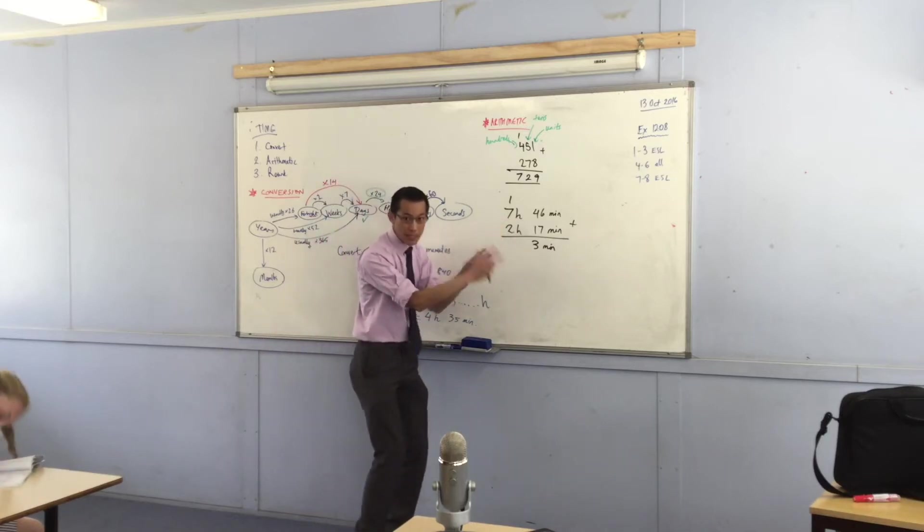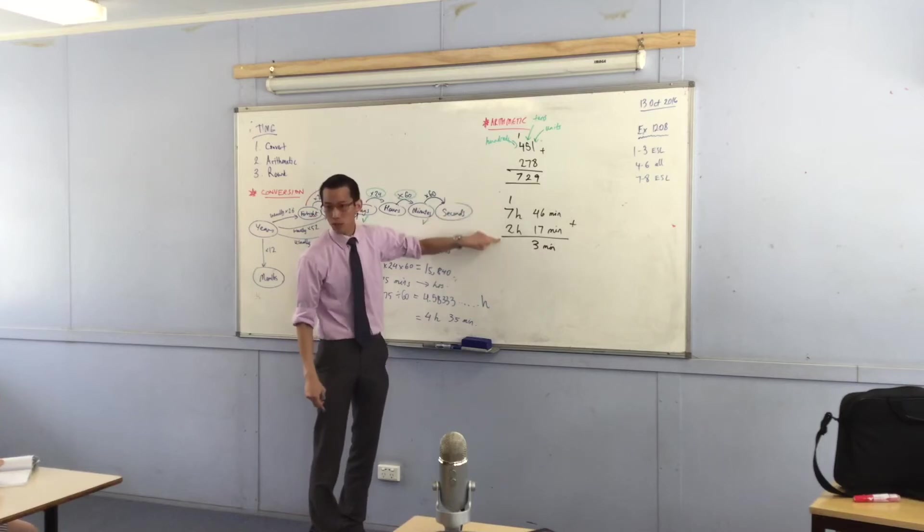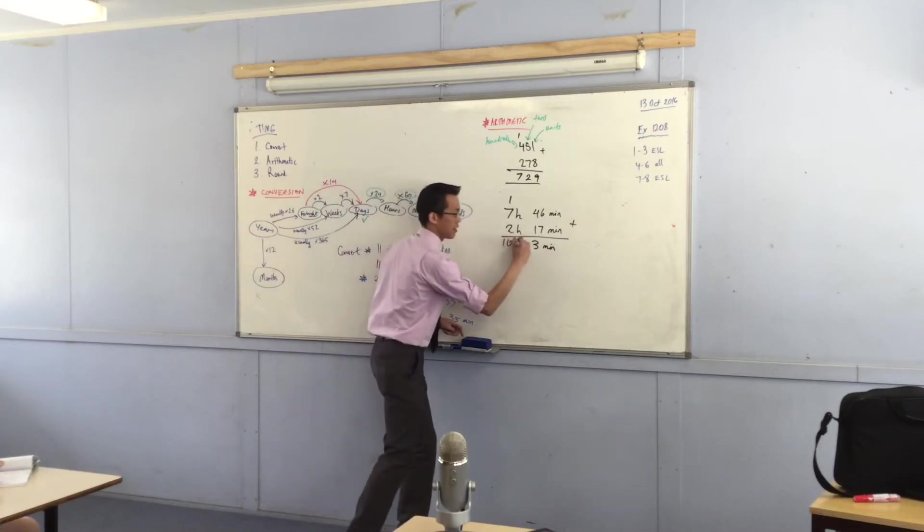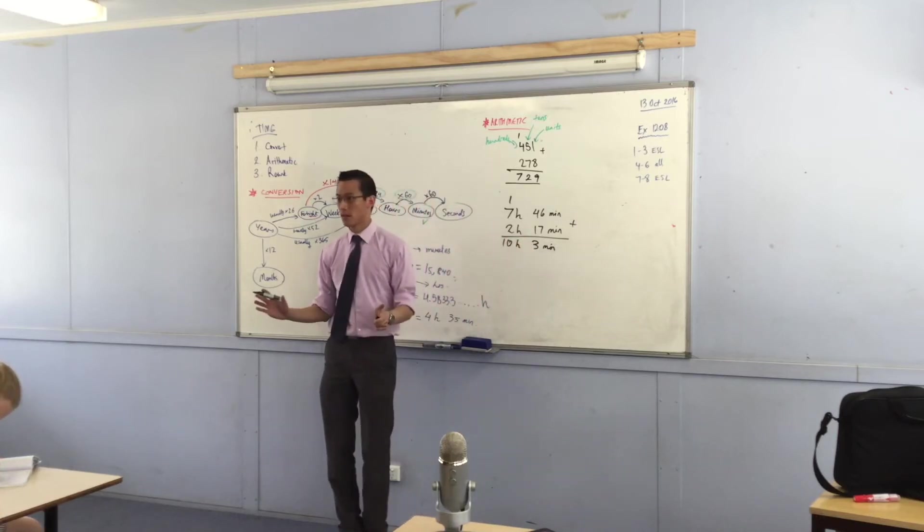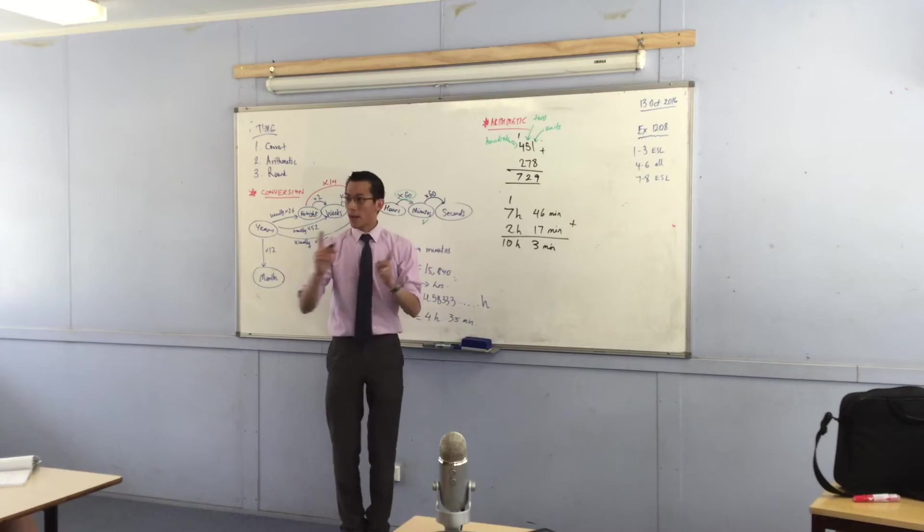So it looks a bit different, but the concept is the same. And now I can go down here. 1 plus 7 plus 2 is 10. Very good. 10 hours, 3 minutes. That's it. Does that make sense? We just did an addition.